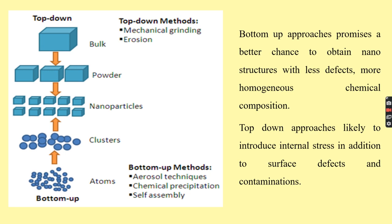When structures fall into the nanometer scale, there is little choice for top-down approaches as all tools are too big to handle such tiny objects. The bottom-up approach promises a better chance to obtain nanostructures with fewer defects and more homogeneous composition. The bottom-up approach is considered better because defects are fewer and chemical composition is more homogeneous, whereas the top-down approach is likely to introduce internal stress and surface defects.